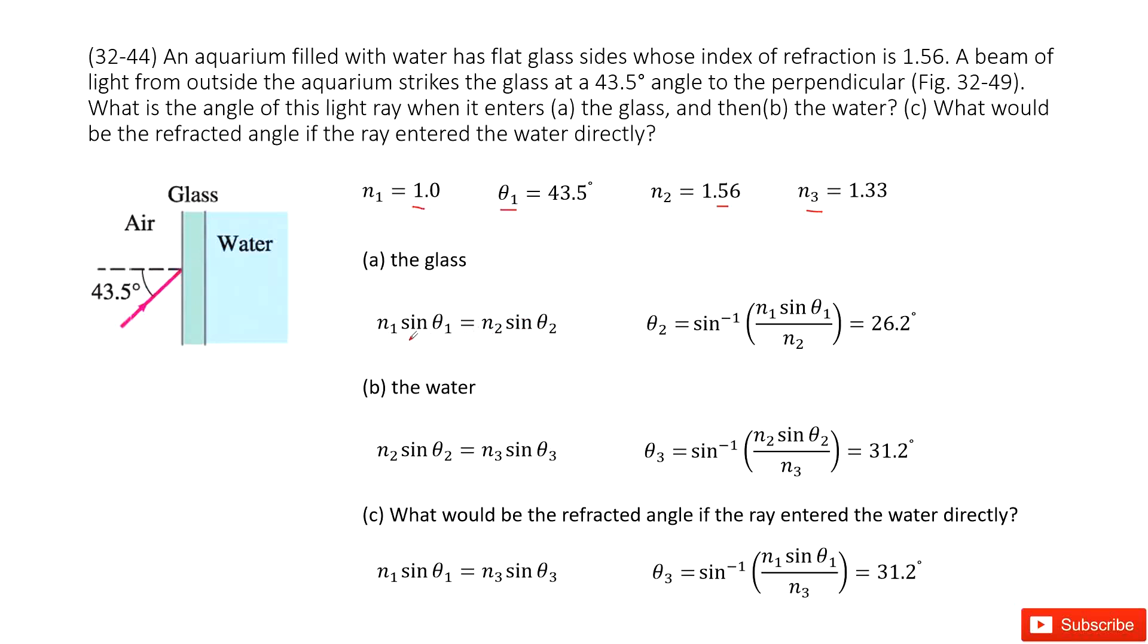We can see n1 is given, theta 1 is given, n2 is given. So very easily we can find theta 2 in this equation. Converting this equation we get a function like this and input all the given quantities in the answer.